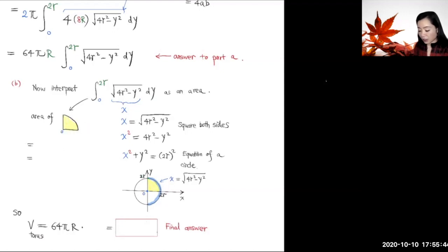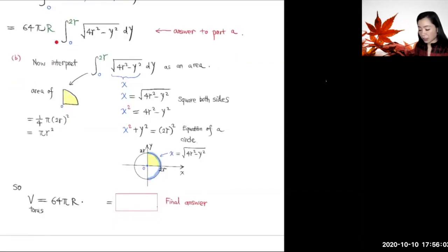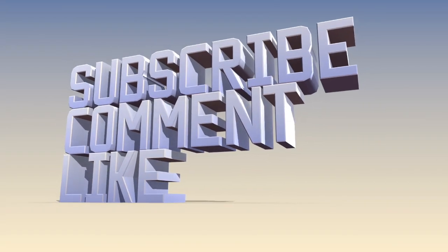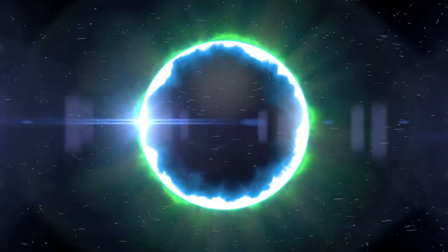Area of that is equal to 1/4 × π × (2r)², which is πr². So we substitute this into here. We got the volume for this whole torus is 64πR × πr². When you simplify, that's equal to 64π²r²R, and that's the final answer.